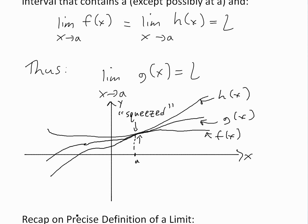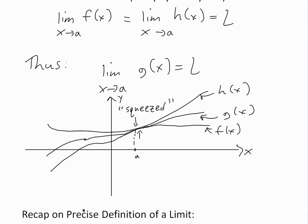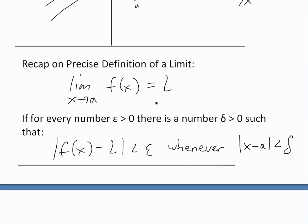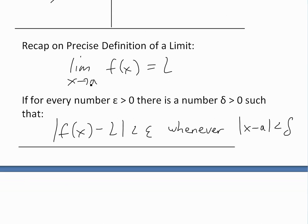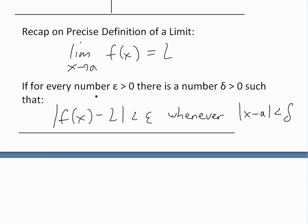Before I get to the proof, just a recap of the precise definition of a limit. The precise definition states: if we're given the limit as x approaches a of f(x) equals L, then for every number epsilon greater than zero, there is a number delta such that the absolute value of f(x) minus L is always less than epsilon, which is a number greater than zero — it can be really, really small — whenever the absolute value of x minus a is less than delta.